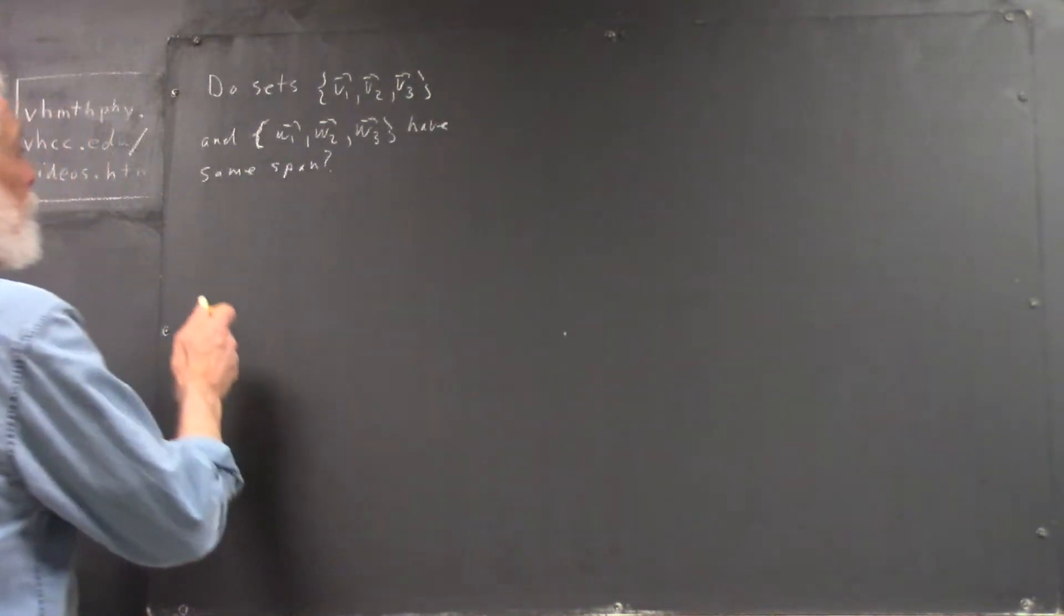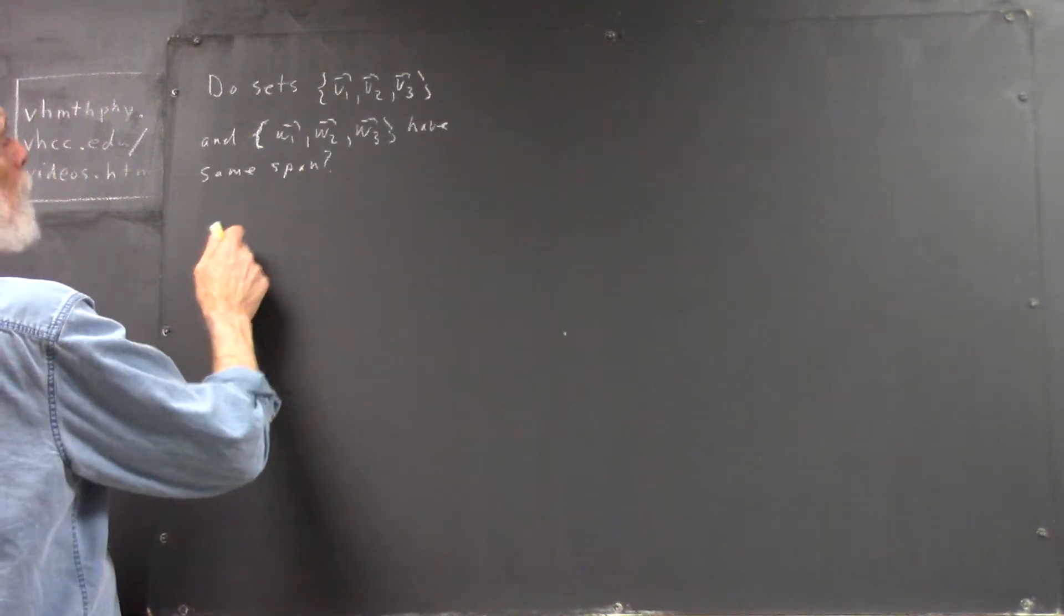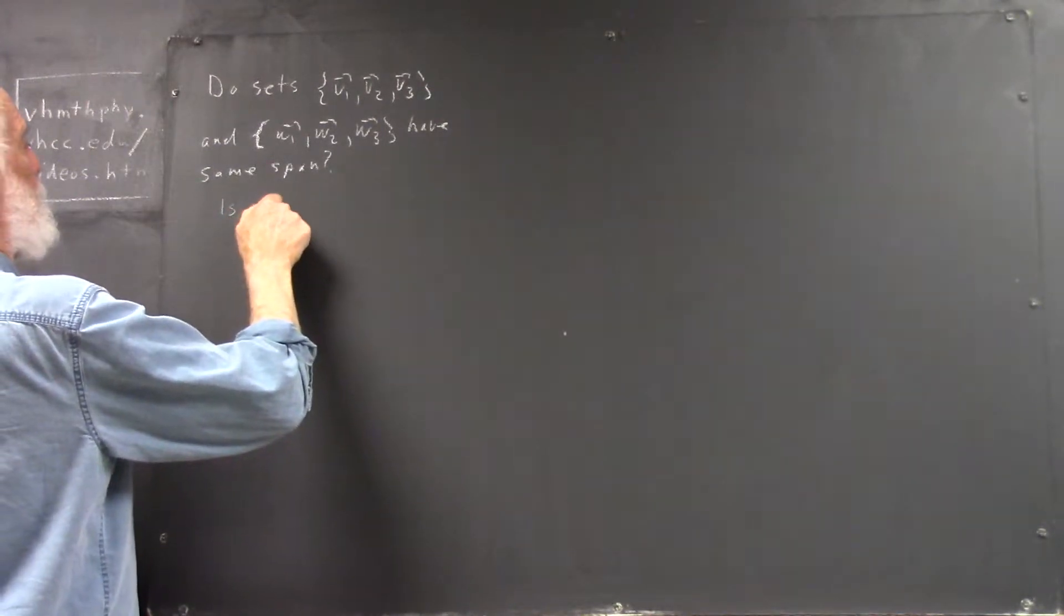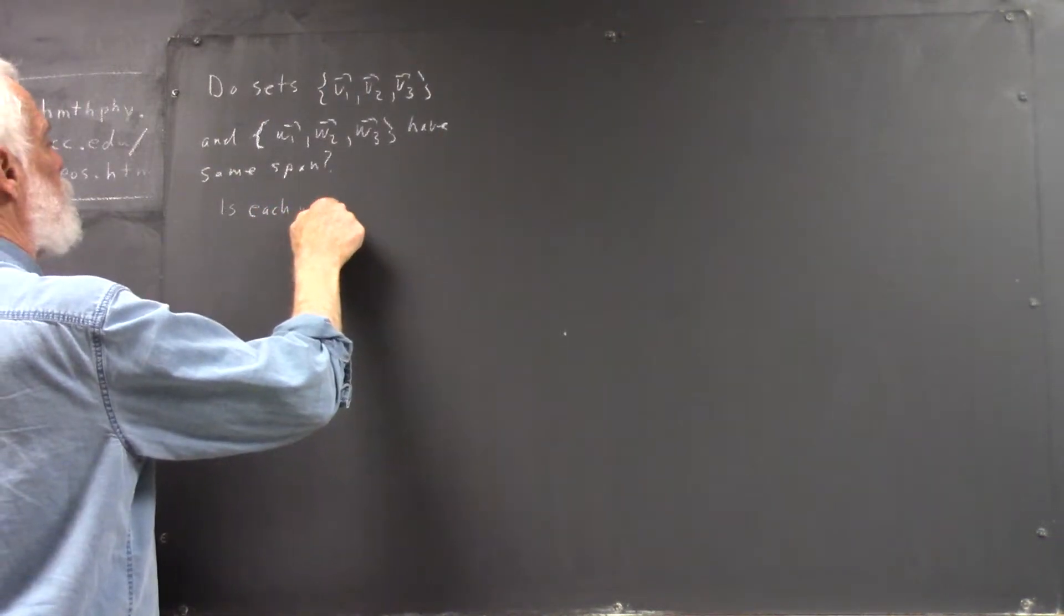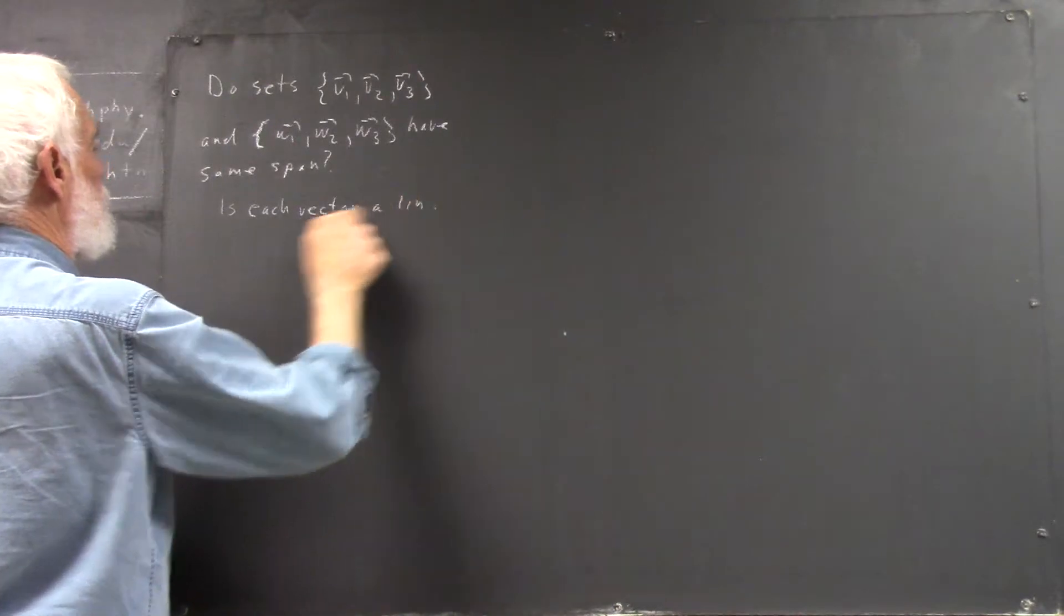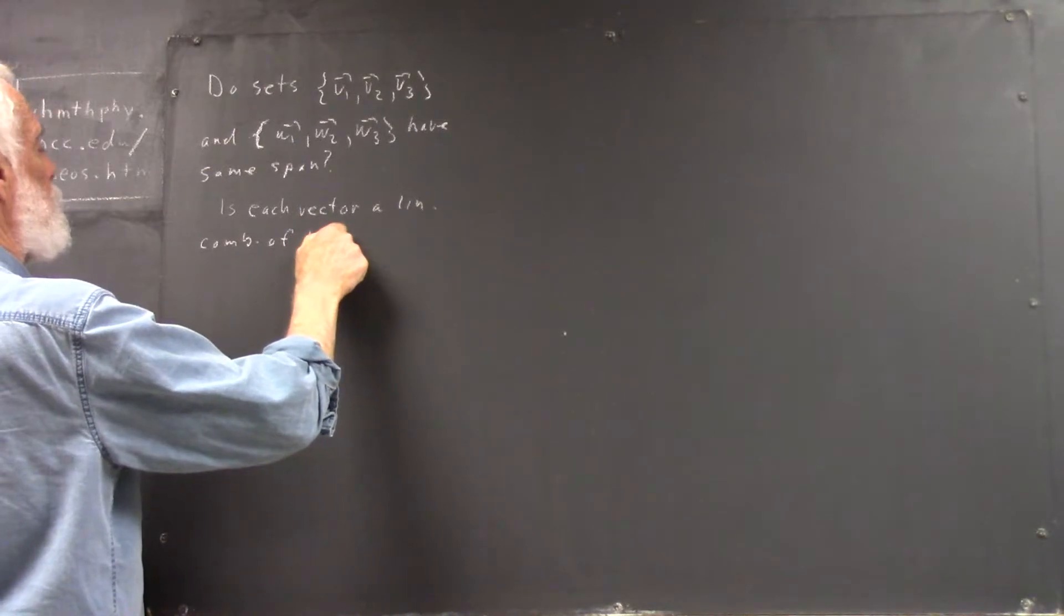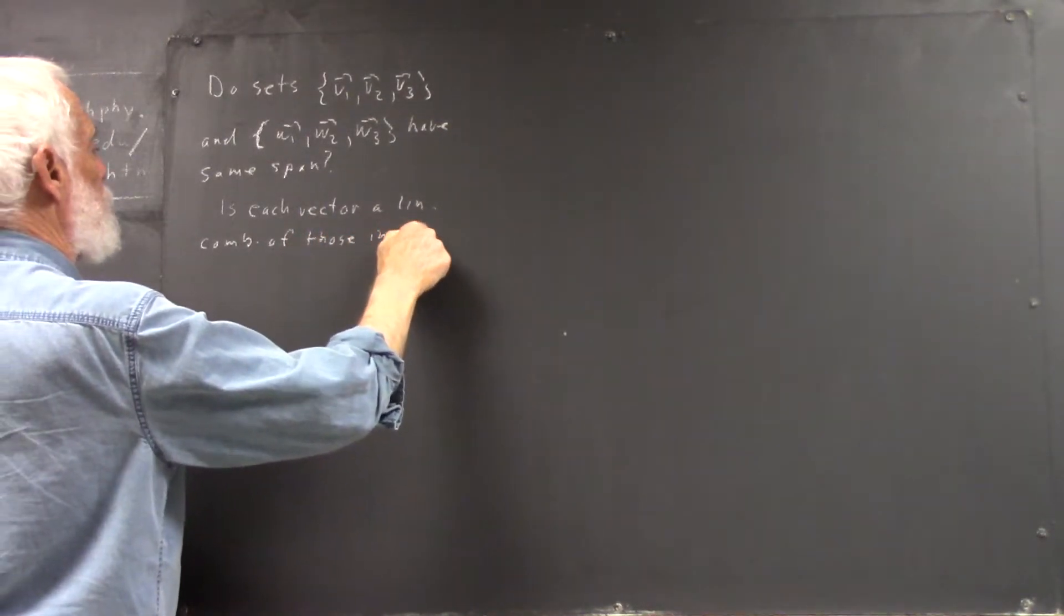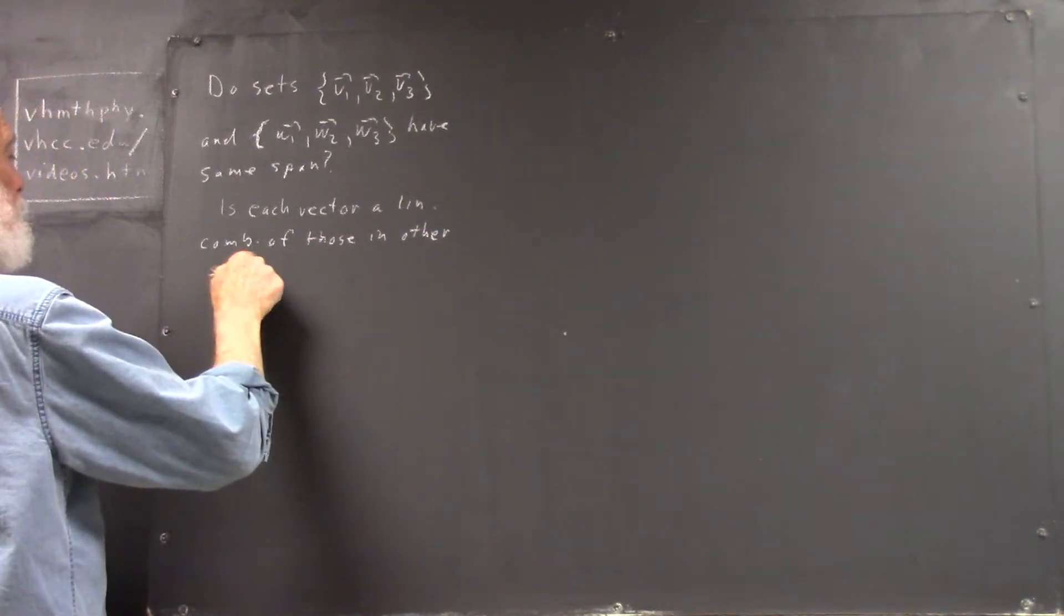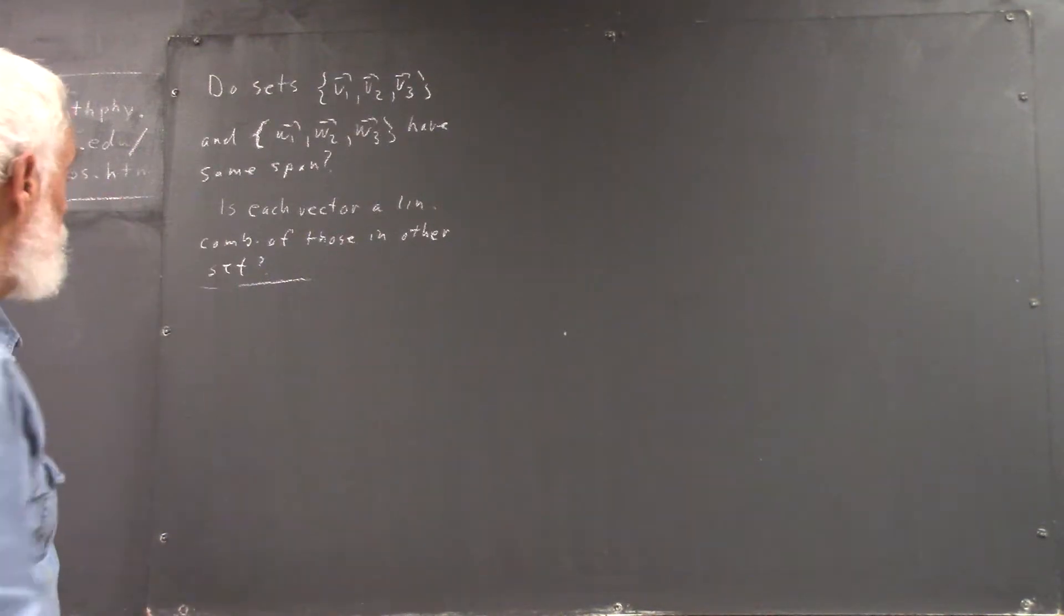So, you could test. Can you solve? Well, is each vector a linear combination of those in the other set? Well, here we could write.